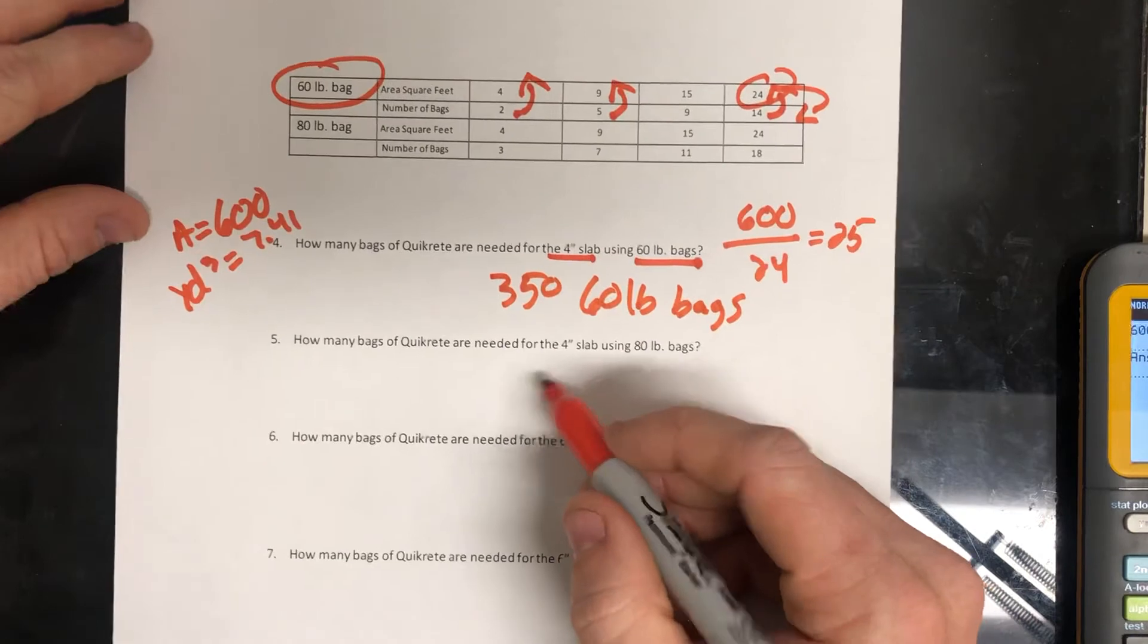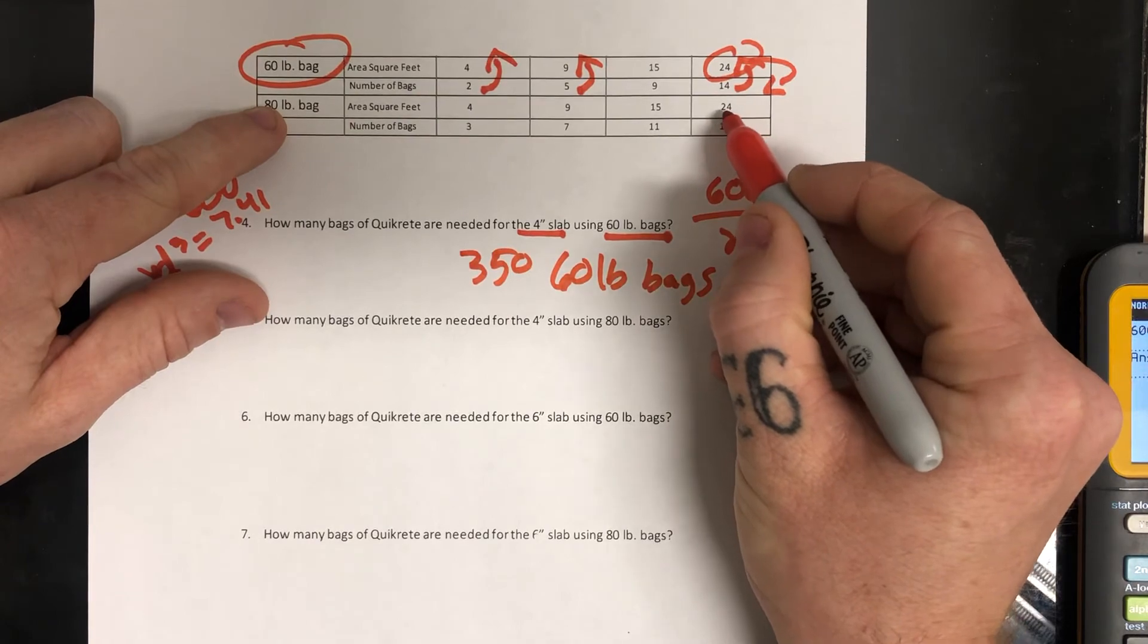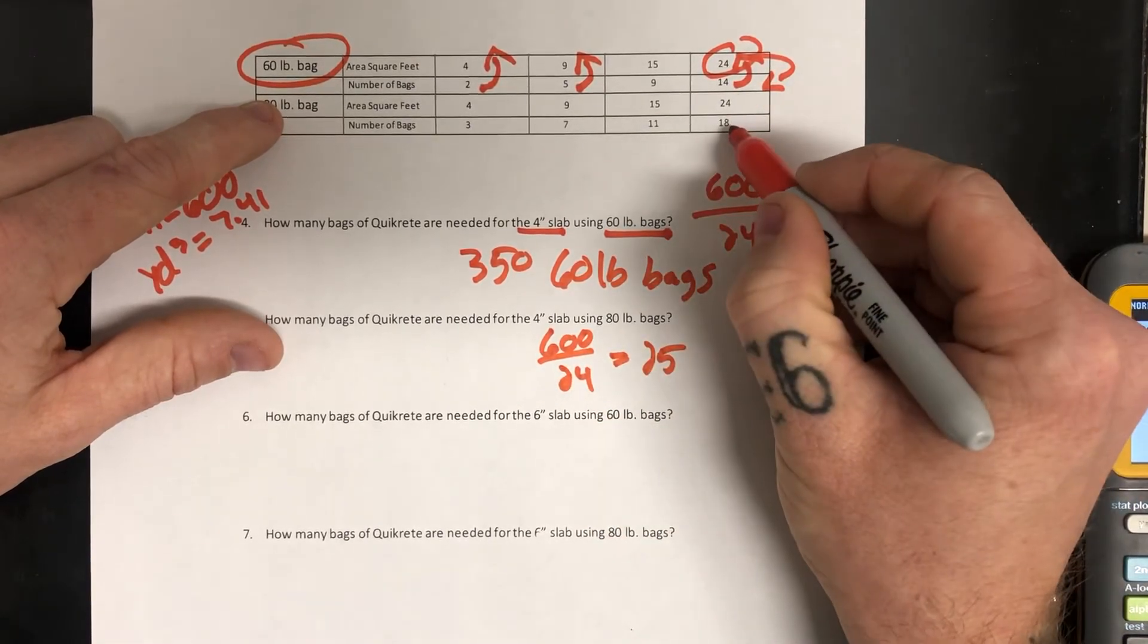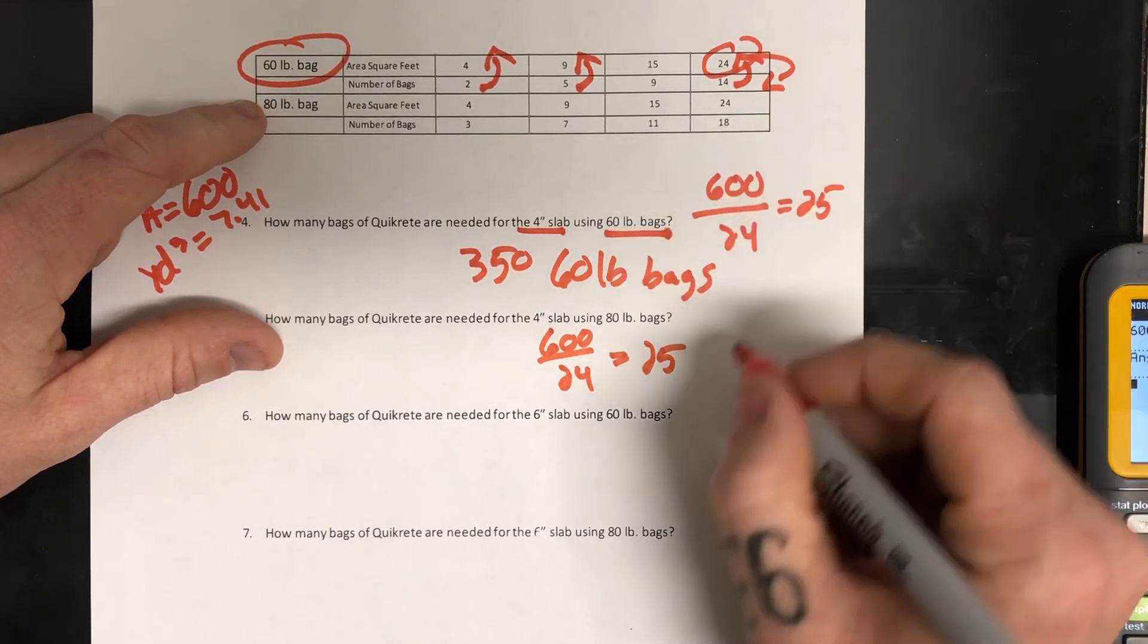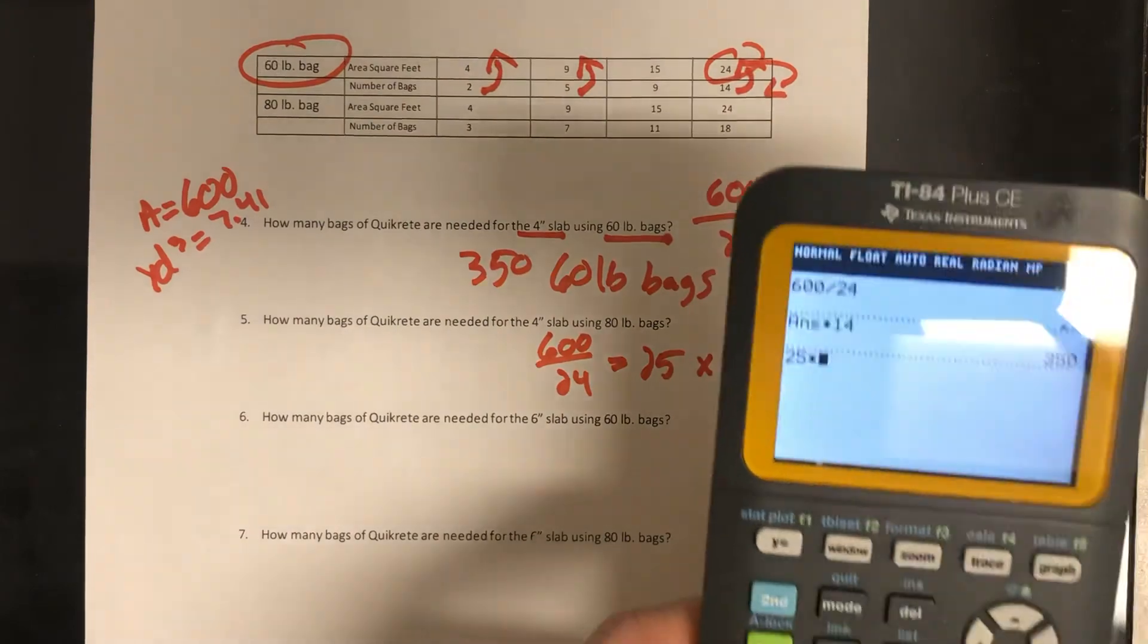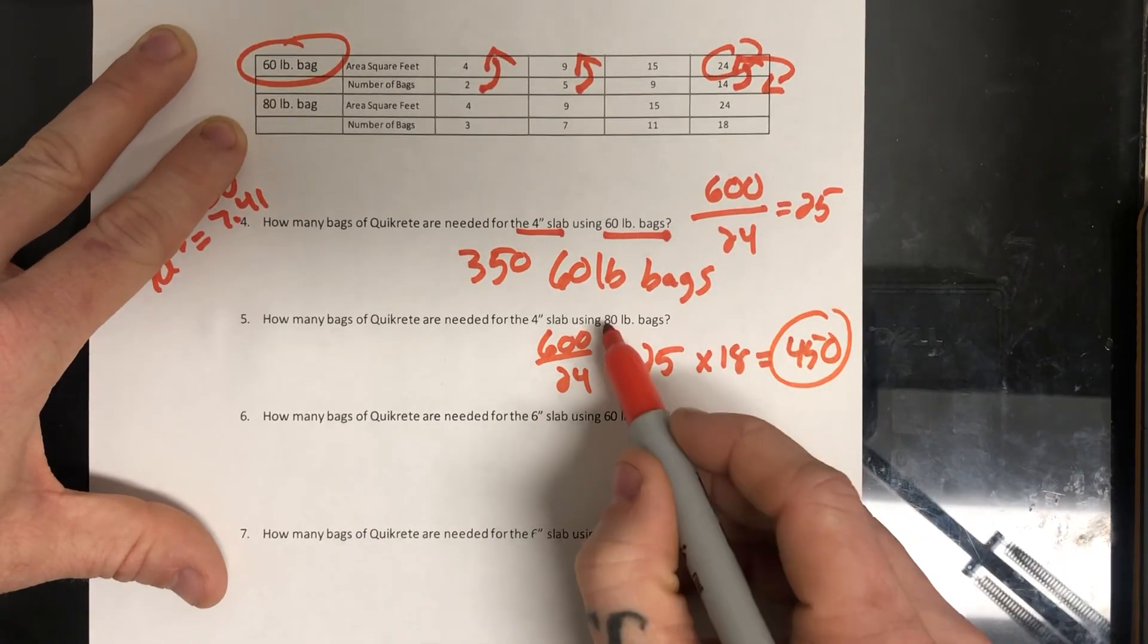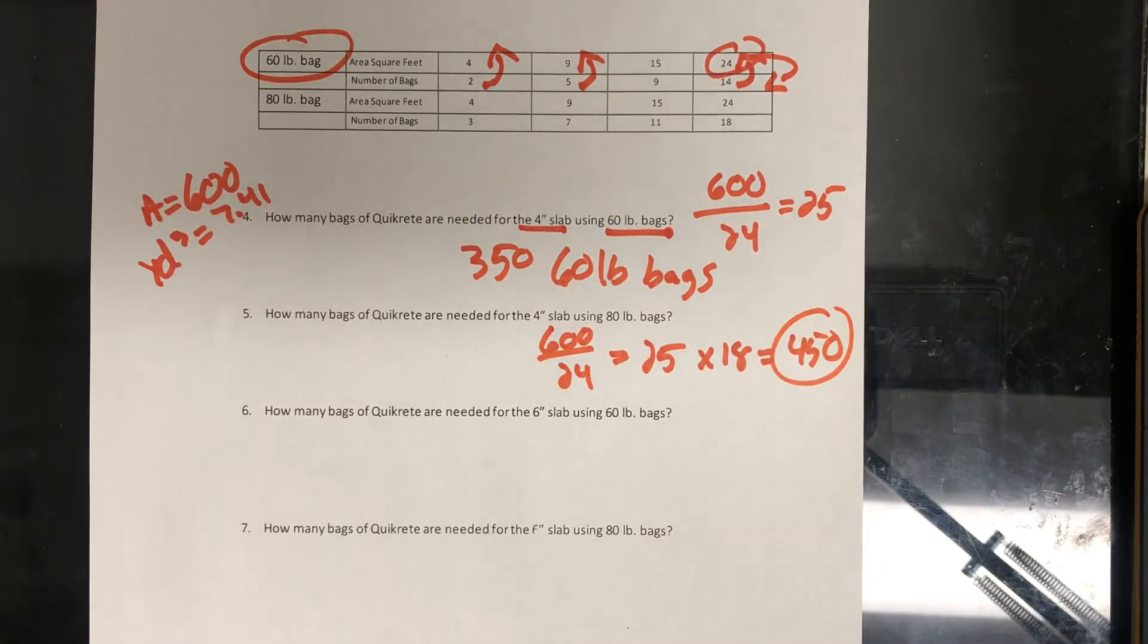Just to show you that again now with 80 pound bags. So 80 pound bags, we have the 24 right here. So we're going to do 600 divided by 24 because that's the highest square footage that they gave us in the chart. That's still 25. But now we're going to multiply 18 because for the 80 pound bags, you need 18 bags to get to 24 feet. So times 18. 25 times 18. It's going to be 450. So 450 bags of 80 pounders and 350 of 60 pound bags. So that's how you would estimate it.